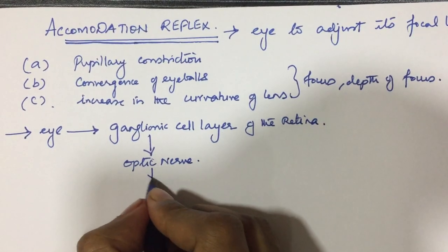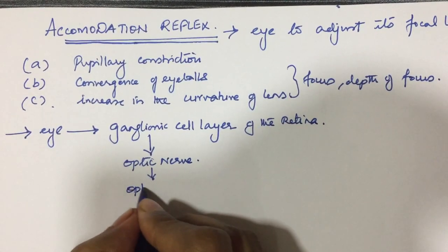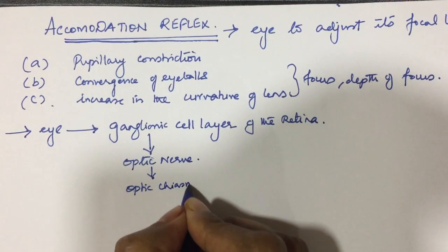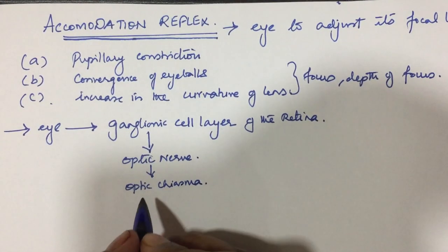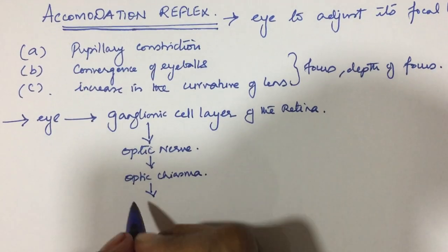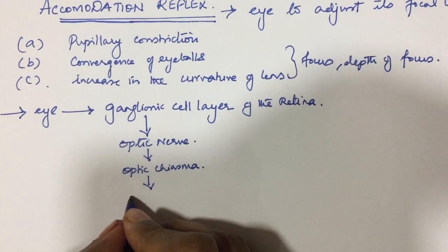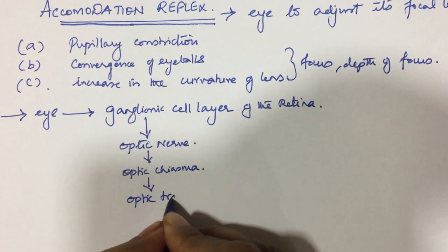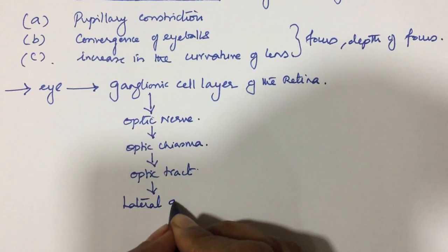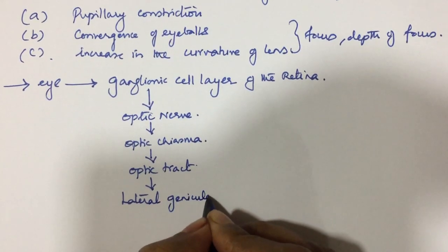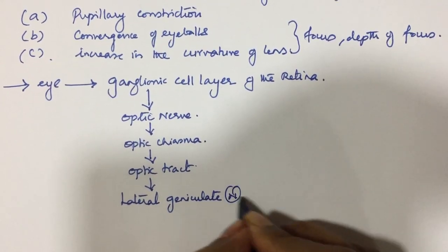From the optic nerve it goes to the optic chiasma where the nasal fibers from each hemiretina decussate. From the optic chiasma it goes to the optic tract.